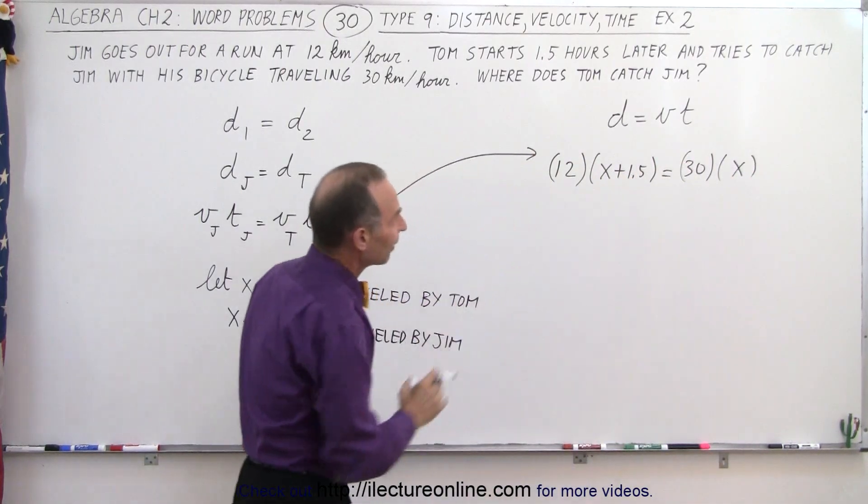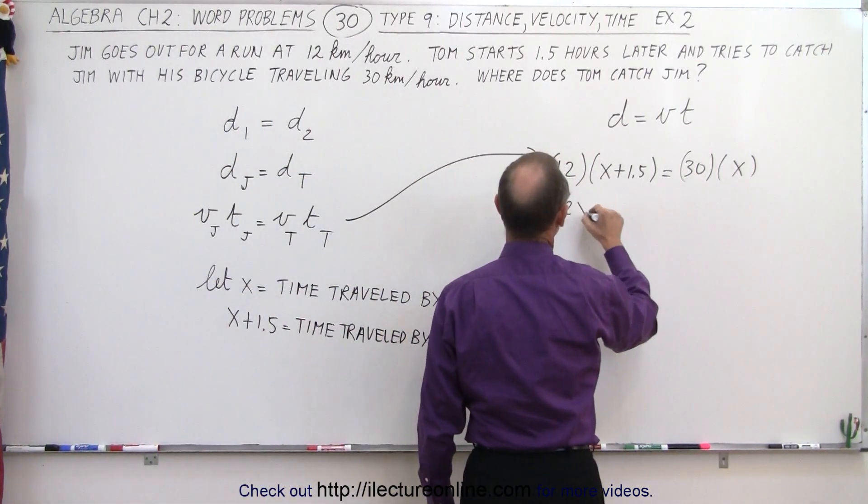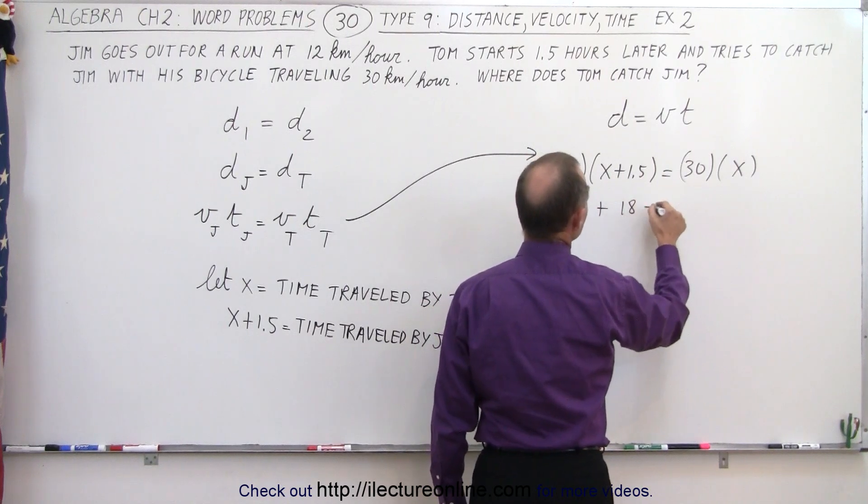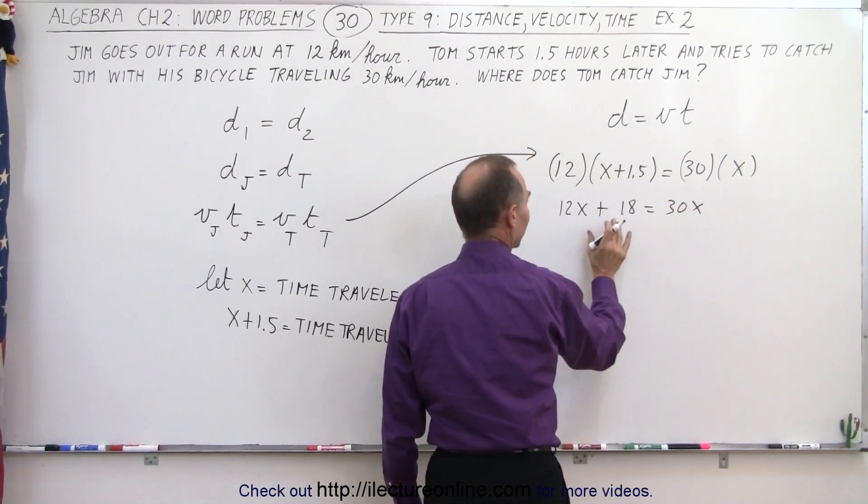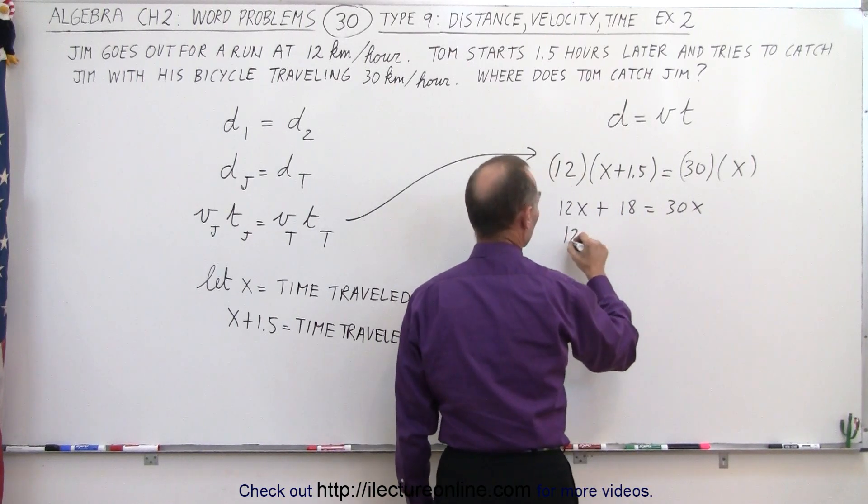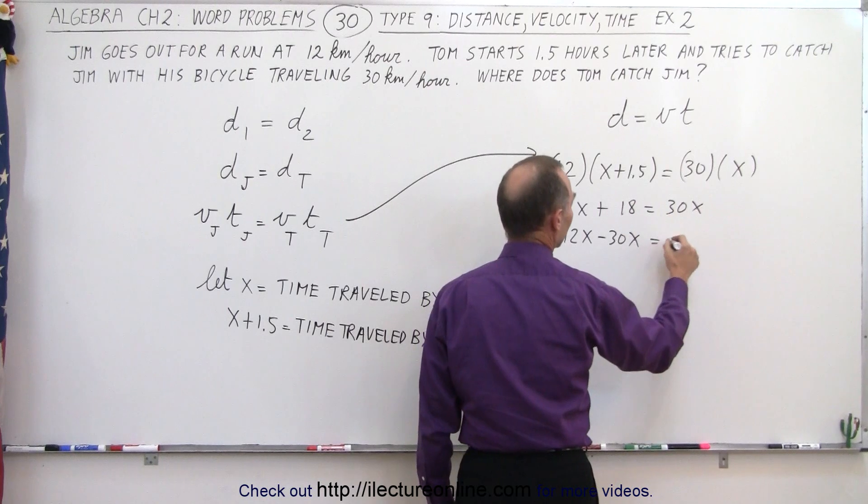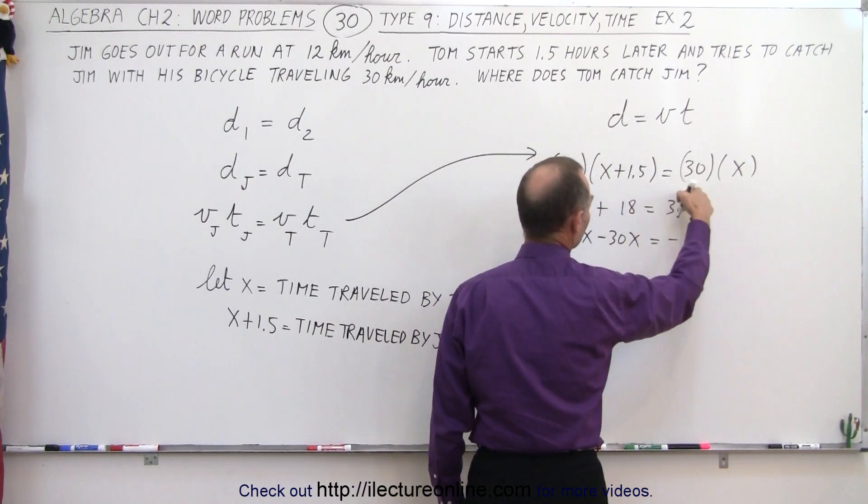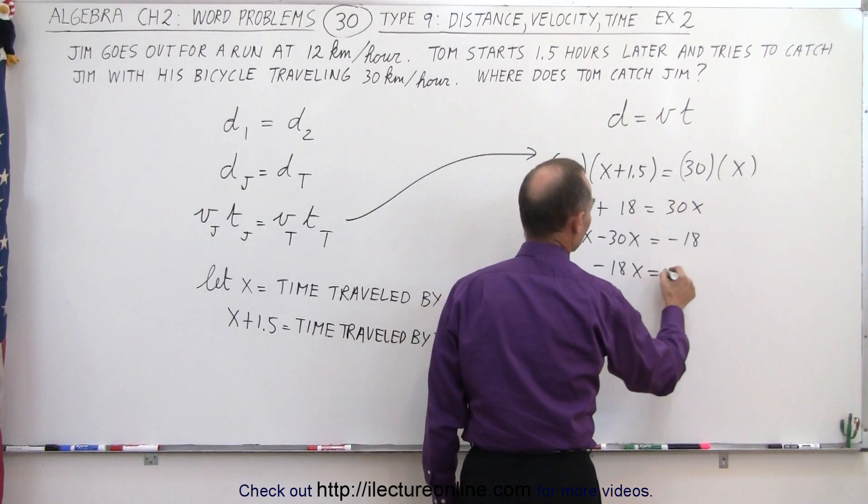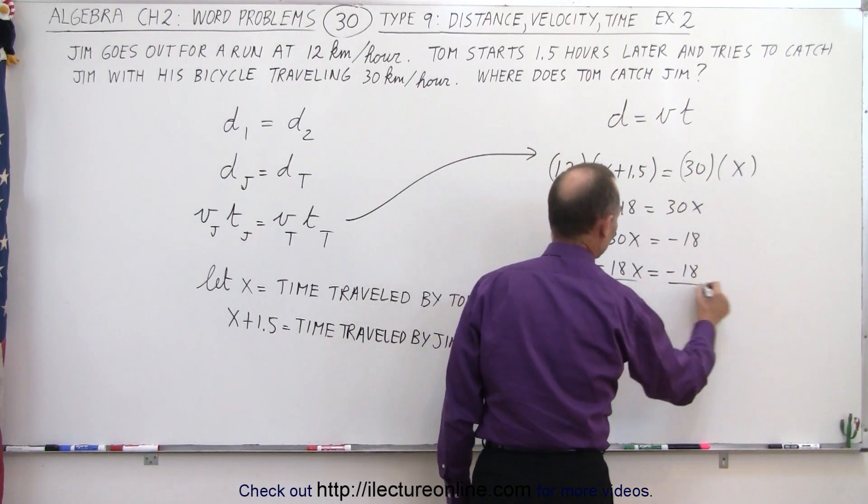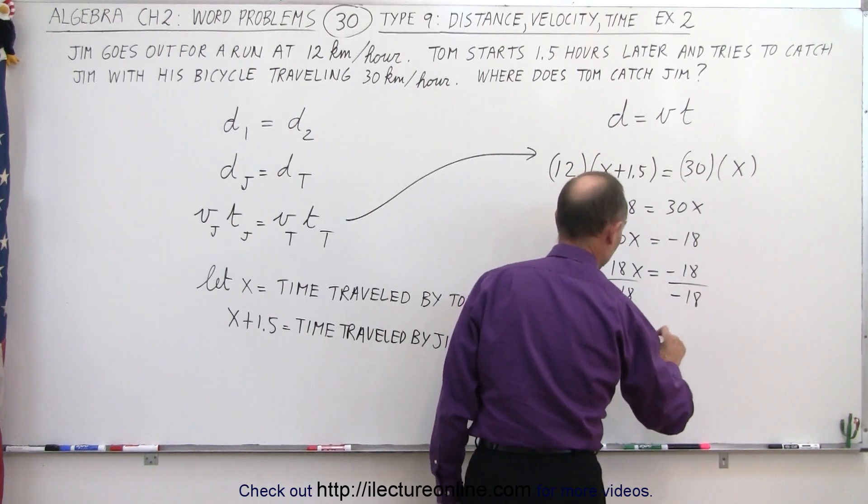Now we need to solve that equation for x. So we multiply this through, we get 12x plus 18 equals 30x. We move all the x's to one side, all the numbers to the other side. 12x minus 30x equals minus 18. And so we get minus 18x equals minus 18, divide both sides by negative 18, and we get x is equal to 1.